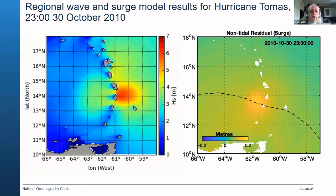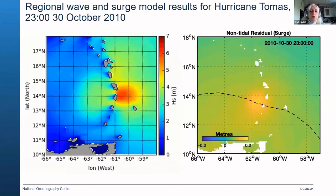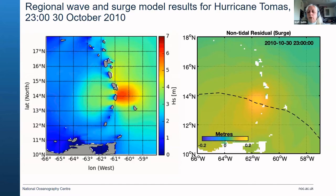On the left, outputs from the regional wave model show waves reaching over six metres, but they were more to the north. The main direct impact was a bit to the north and St. Lucia got more effect of the waves than did St. Vincent.